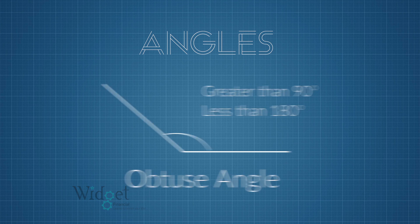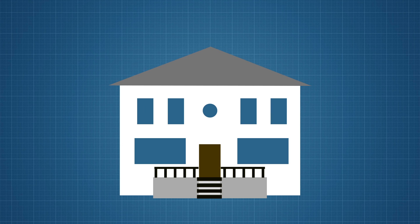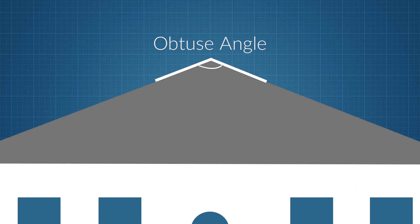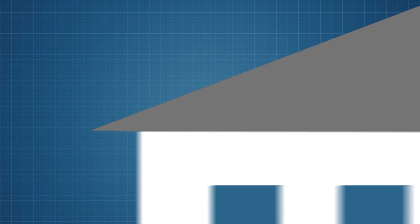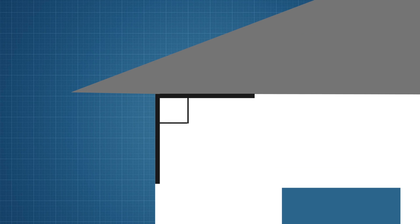Let's see if we can find each one of these angles in this house. Can you find them all? The obtuse angle is up there on the top of the roof — it is greater than 90 degrees but smaller than 180 degrees. On the bottom of the roof there is the acute angle — it is smaller than 90 degrees. You can see the corner of the house is a right angle — it is exactly 90 degrees.